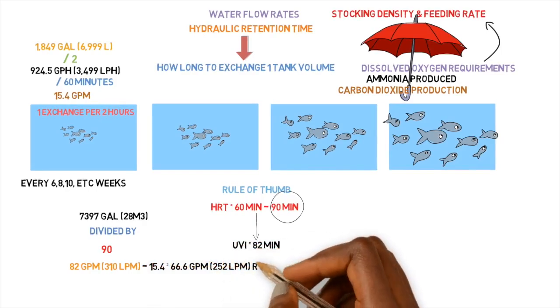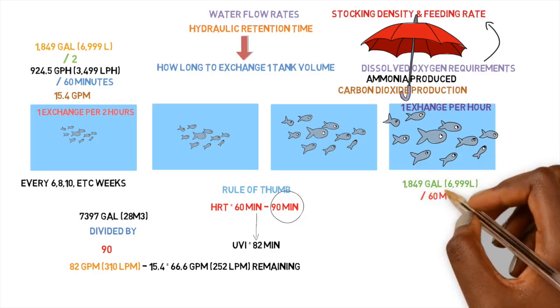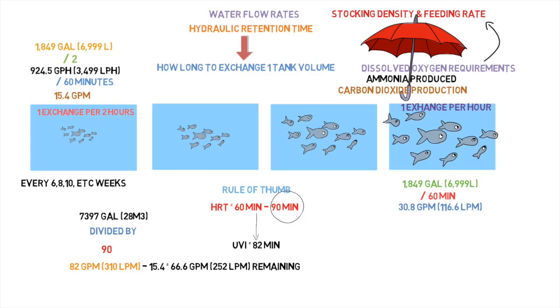And then from here, we can do the tank with the largest stocking density. This is going to have the lowest hydraulic retention time. I like to do one per hour, one time per hour, because this has the largest mass of fish and it's being fed the highest. So 1,849 divided by 60, and that's going to give us 30.8 gallons per minute. So when we subtract the 82 and we subtract the 15.4 and the 30.8, that's going to leave us with 35.8 gallons per minute left. So we'll just take that and we can apply that to the last two tanks.